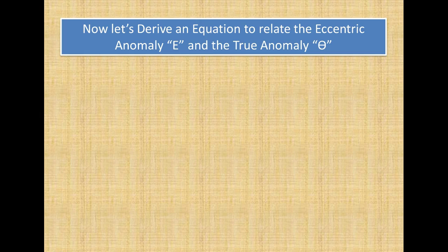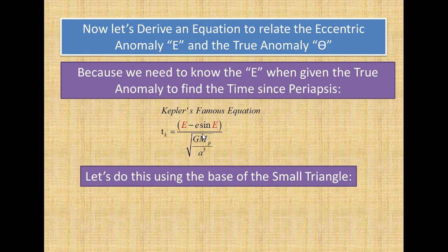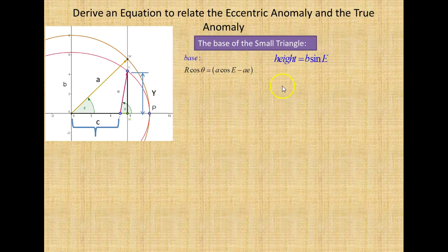Now let's derive an equation to relate the eccentric anomaly E and the true anomaly theta. We need to know E when given the true anomaly to find the time since periapsis. Using the base of the small triangle: the base is R cosine theta equals A cosine E minus AE, and the height is B sine E. Using the Pythagorean theorem on the small triangle: R squared equals (A cosine E minus AE) squared plus B squared sine squared E.